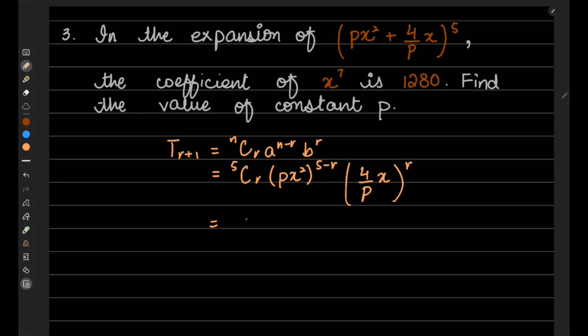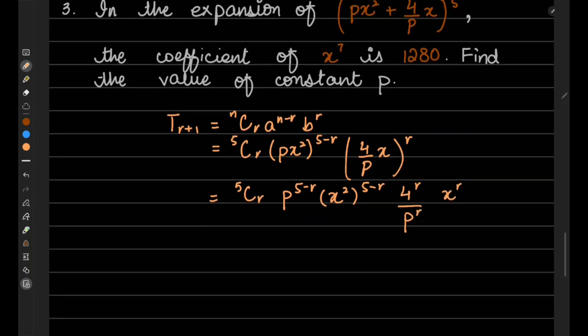What do we do in this? First we separate the x powers. So 5Cr p^(5-r) and x² to the whole power (5-r), then 4^r over p^r and x^r.